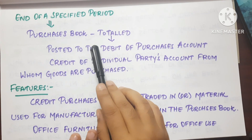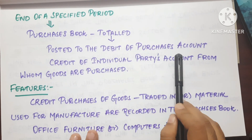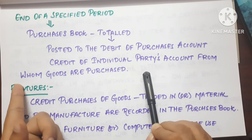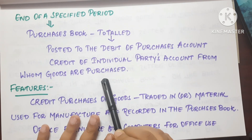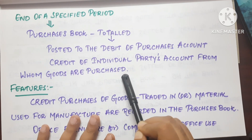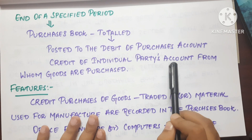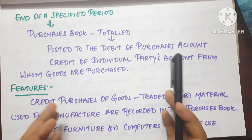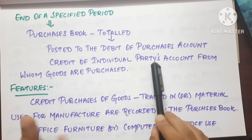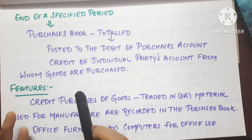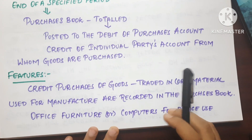At the end of the period, the total of the purchase book is sent to the debit side of the Purchase Account in the ledger. Individual suppliers' accounts are credited — we create a separate ledger account for each individual party from whom goods are purchased, and we pay them accordingly. This completes the ledger posting from the purchase book.